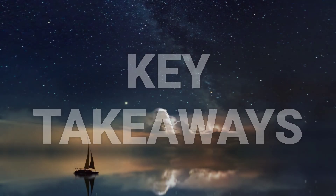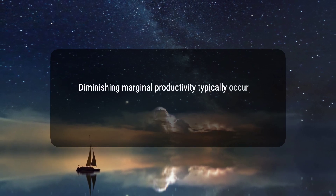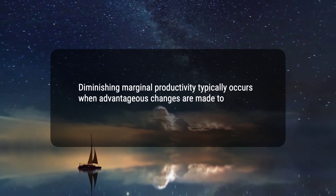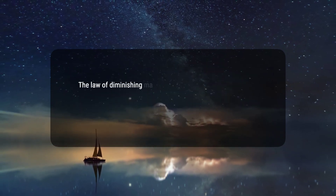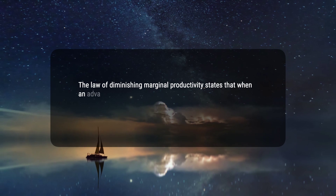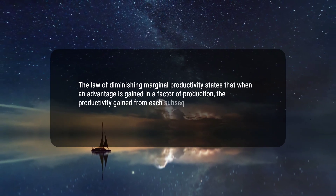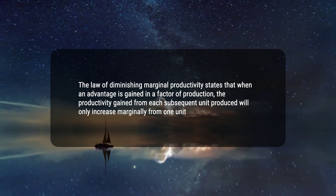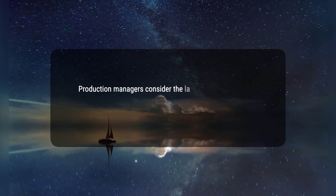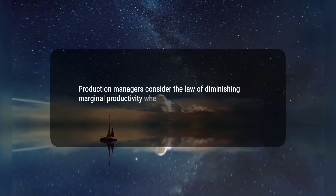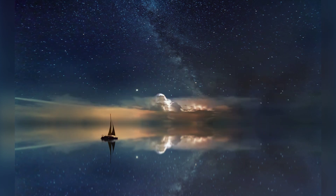Here are three key takeaways. 1. Diminishing marginal productivity typically occurs when advantageous changes are made to input variables affecting total productivity. 2. The law of diminishing marginal productivity states that when an advantage is gained in a factor of production, the productivity gained from each subsequent unit produced will only increase marginally from one unit to the next. 3. Production managers consider the law of diminishing marginal productivity when improving variable inputs for increased production and profitability. Hope this would help.